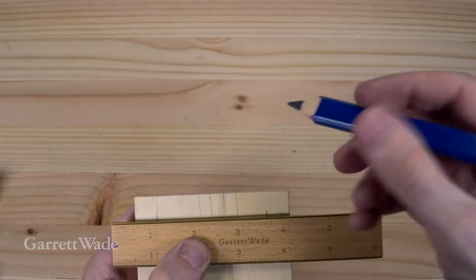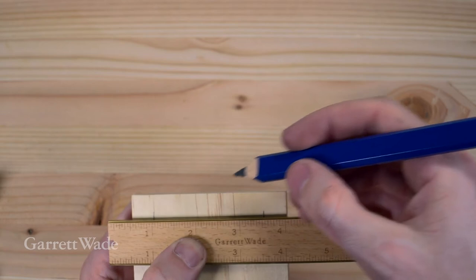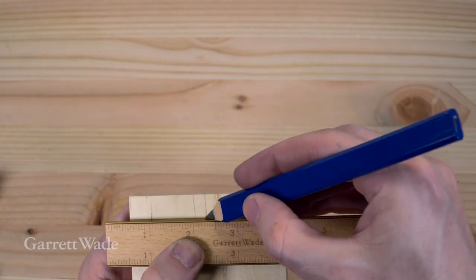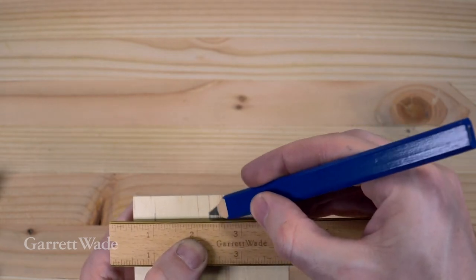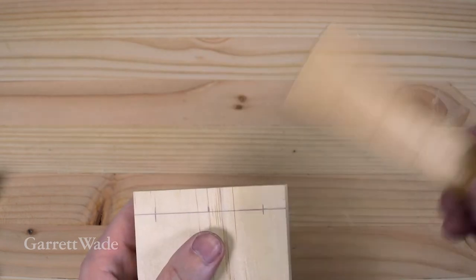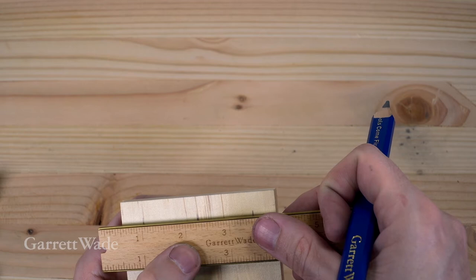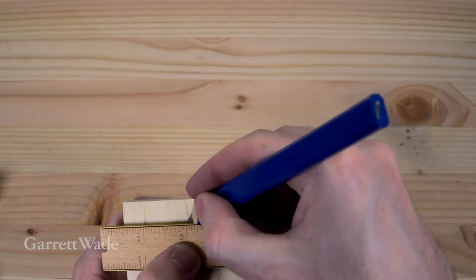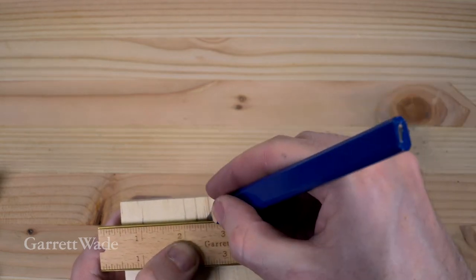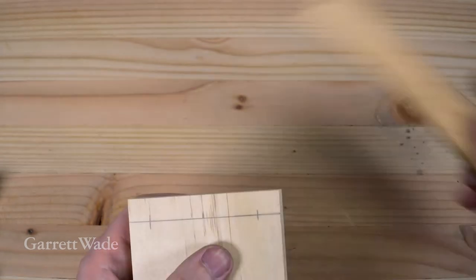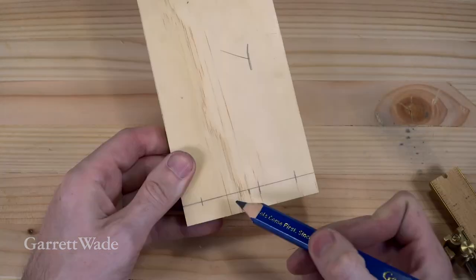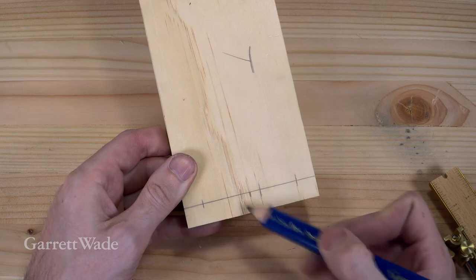I'm going to find the middle between these points, which is inch and a quarter here. Now I'm going to go a quarter inch on each end. Now I need the angle of my tails.